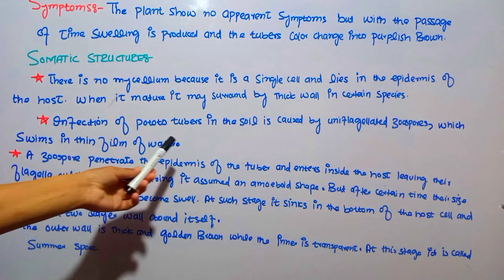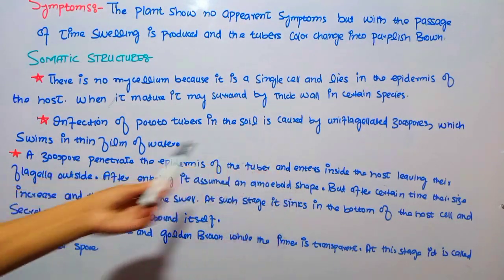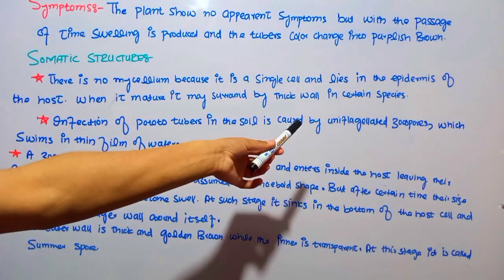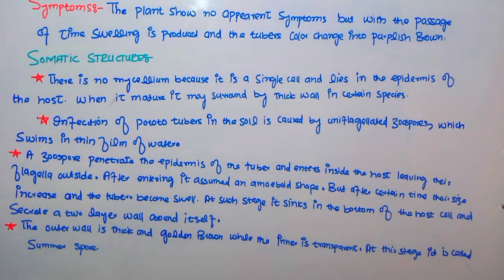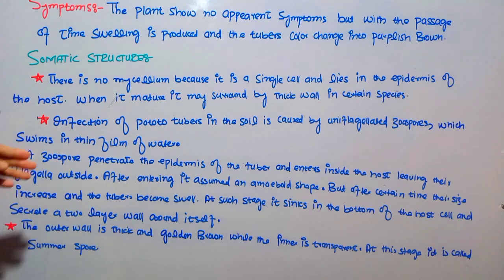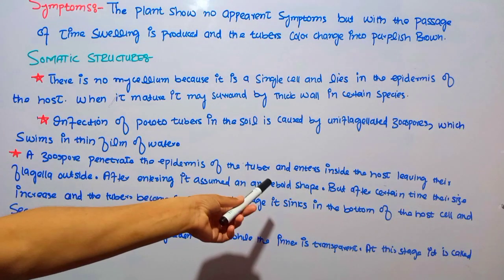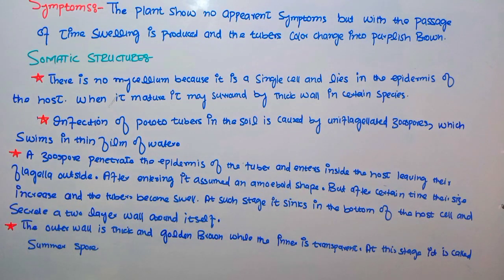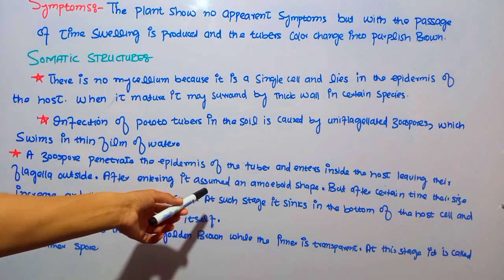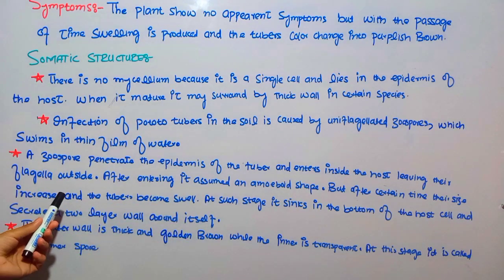Infection of potato tubers in the soil is caused by uniflagellated zoospores which swim in a thin film of water. The zoospores of Synchytrium endobioticum have only one flagellum, which helps them move. The zoospore moves through the water film toward the epidermis of the tuber, penetrates into it, and enters inside the host, leaving its flagellum outside.